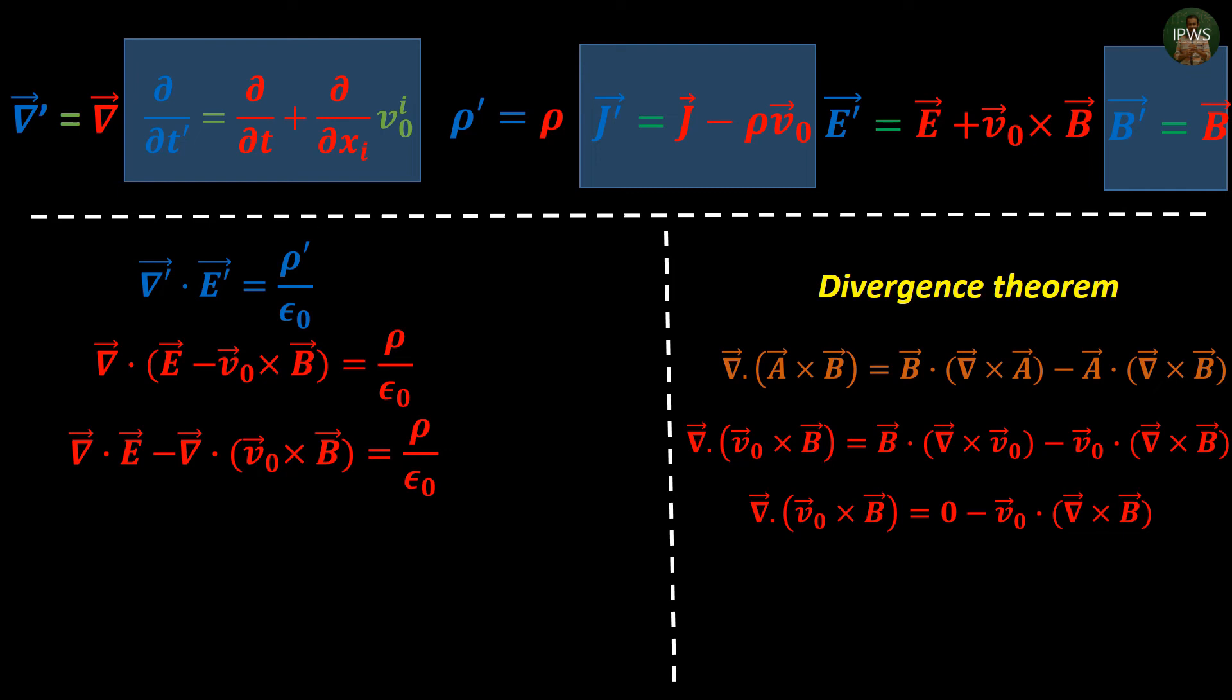And when we rearrange we see that Gauss's theorem as seen by a moving observer is not quite the same as it was in the static frame x. For our second equation which proves the existence of paired magnetic dipoles remains the same because both three-dimensional differential operator and magnetic field remains the same.